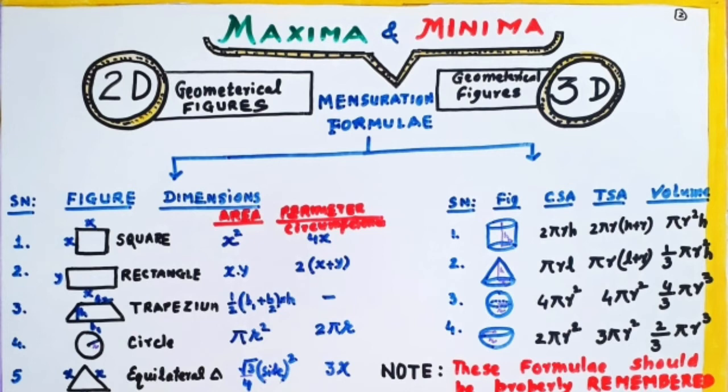Similarly, we must know the curved surface area of cylinder, that is 2 pi r h. Total surface area, 2 pi r into h plus r. Then volume, pi r square h. Next, cone, pi r l is the curved surface area. Pi r into l plus r, total surface area. Volume is 1 by 3, pi r square h.